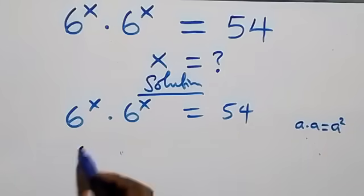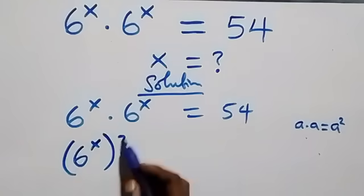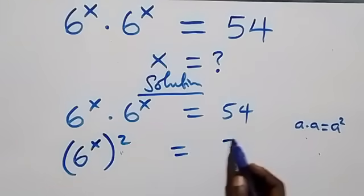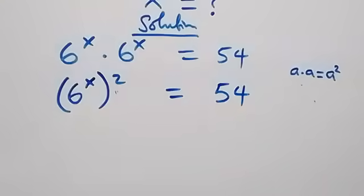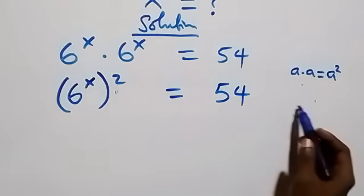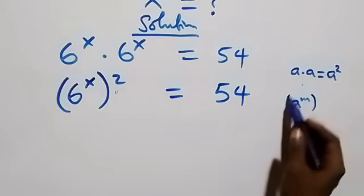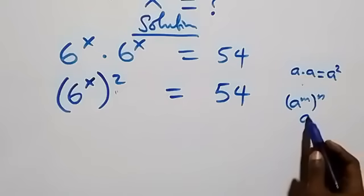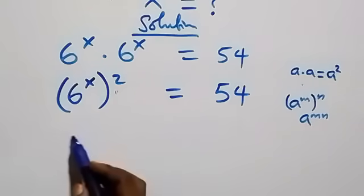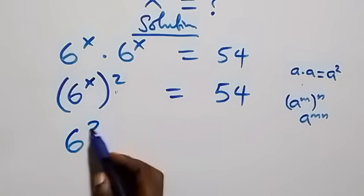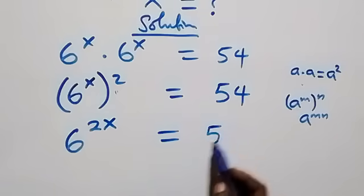We can write this as 6 raised to power x plus x, which equals 54. This follows from the rule that when we have a raised to power n, raised to power n, it is the same thing as a raised to power n times n — the powers multiply. So we have 6 raised to power 2x equals 54.